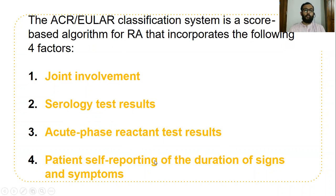Based on these four components, we create a scoring system. If the total score is equal to or above 6, we can confirm the case as rheumatoid arthritis. If it is below 6, then we wait and reassessment should be taken.